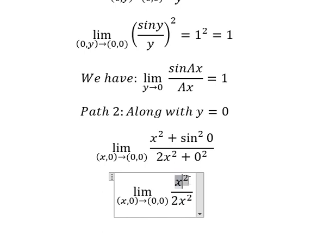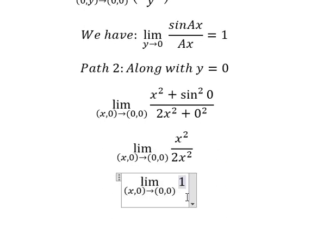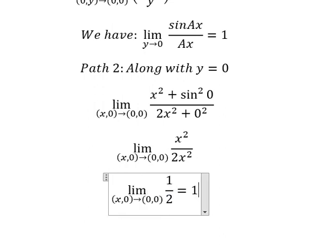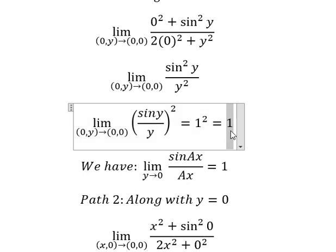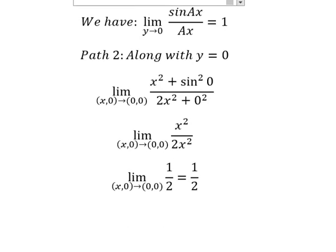We see that x squared divided by x squared, so we just have one over two. We can see that path number one equals one, path number two equals one over two.